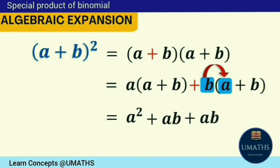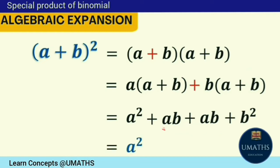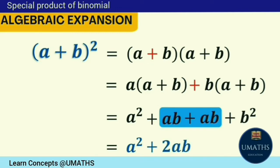Then b times a gives ab, and b times b gives b squared. We can now simplify this expression by adding like terms: a squared, then ab and ab are like terms giving 2ab, plus the last term b squared.